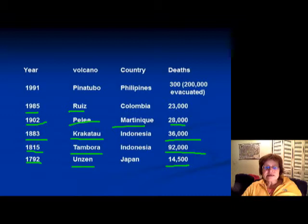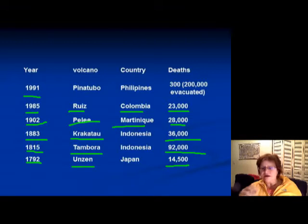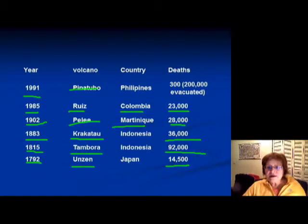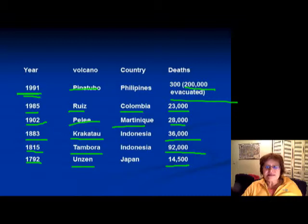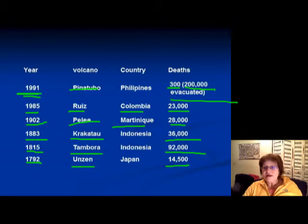Nevado del Ruiz in Colombia in 1985 killed 23,000 people. In 1991, Pinatubo was one of the biggest eruptions in recent history — it would have killed 200,000 people, but they were evacuated. By 1991 people knew better, and there was a large American military base in the area that helped with evacuation. Only 300 people died — those were the ones who refused to move away.